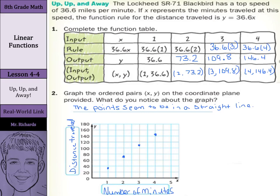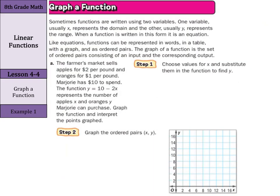Let's continue on. Now, to graph a function. Sometimes functions are written using two variables. One variable, usually x, represents the domain, and the other, usually y, represents the range. When a function is written in this form, it is an equation. Like equations, functions can be represented in words, in a table, with a graph, and as ordered pairs. The graph of a function is the set of ordered pairs consisting of an input and the corresponding output.